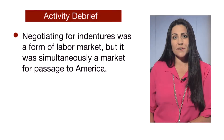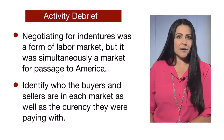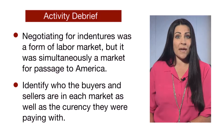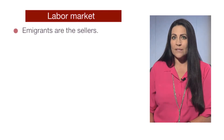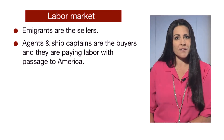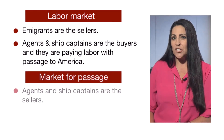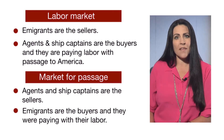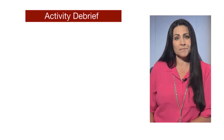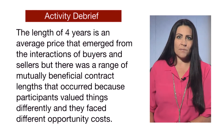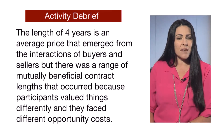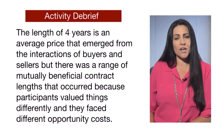Highlight these concepts in your debrief. The process of negotiating indentures was simultaneously a labor market and a market for passage to America. Help students identify who the buyers and sellers are in each market and what currency they used. In the labor market, emigrants are the sellers and agents and ship captains are the buyers, paying for labor with passage to America. In the market for passage to America, agents and captains were the sellers, emigrants were the buyers, and they paid for passage with their labor. The length of four years is an average price that emerged from buyer-seller interactions, but there was a range of mutually beneficial contract lengths because participants valued things differently and faced different opportunity costs.